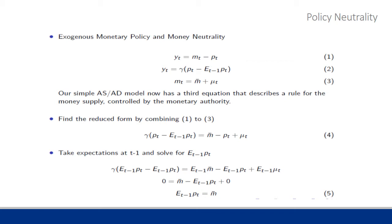To solve this model, we can simply take equation three — which is that M_T is driven by M-bar plus the aggregate demand or monetary shock — and substitute equation three into equation one. So we replace M_T in equation one with M-bar plus mu_T. We then have two equations in Y and can find the reduced form by equating the two right-hand sides, combining all three equations so that the right-hand side of the aggregate supply relation equals the right-hand side of the aggregate demand equation, which incorporates equation three.